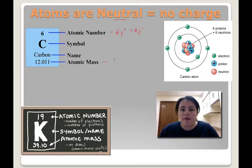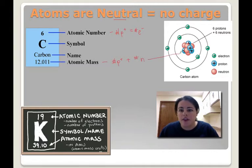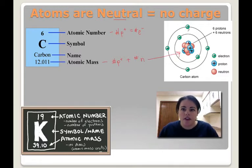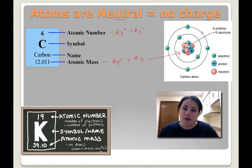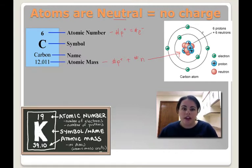Then we have the atomic mass, which is the number of protons plus the number of neutrons in an atom. They always add up together and are found in the nucleus — they actually form the nucleus. The electrons are the negatively charged ones found in the shells, or the clouds, or the orbits around the nucleus.